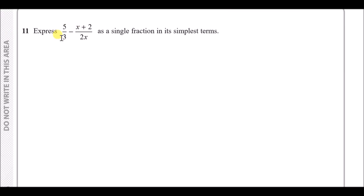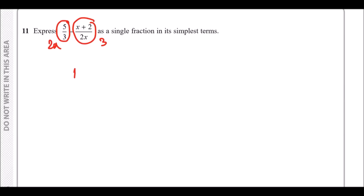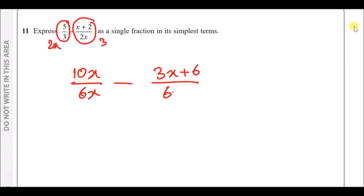Number eleven: express the fraction as a single fraction in its simplest form. This involves subtracting algebraic fractions. To subtract fractions we need common denominators. One denominator is 3 and the other is 2x. Multiply the left fraction top and bottom by 2x, and the right fraction top and bottom by 3, giving a common denominator of 6x.